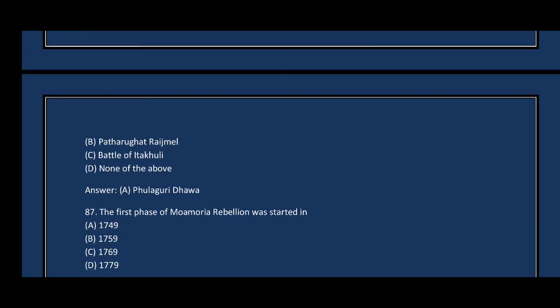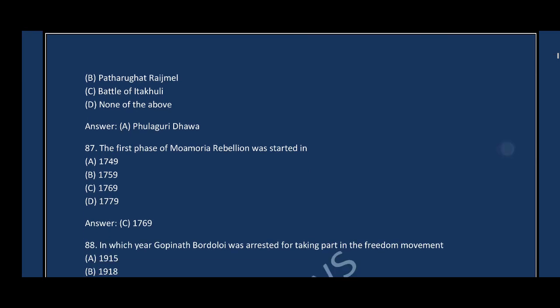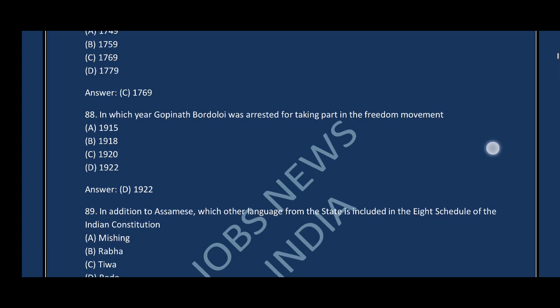Question number eighty-seven: The first phase of the Moamoria Rebellion was started in — the correct answer is 1769. Question number eighty-eight: The first Assamese to be arrested for taking part in the Freedom Movement — the correct answer is 1922.